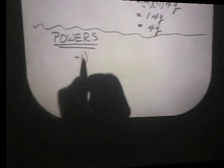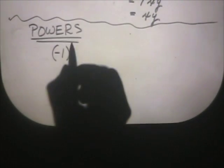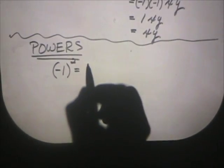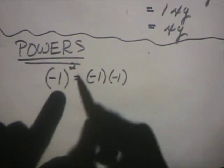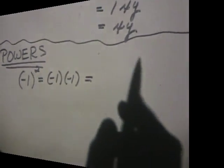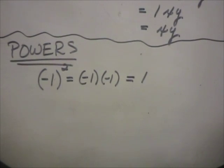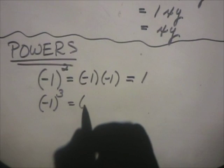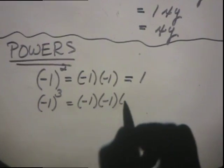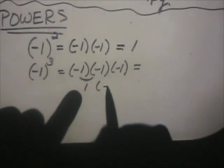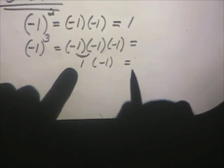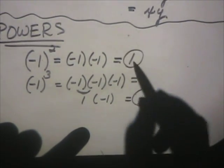Let's talk about powers. If I take negative 1 in parentheses and raise it to the second power, that literally means negative 1 times itself — negative 1 times negative 1 — and that pair of negatives counteracts through multiplication rules to give positive 1. What if I raise negative 1 to the third power? That's negative 1 times negative 1 times negative 1. The first two give positive 1, and positive 1 times negative 1 gives negative 1.